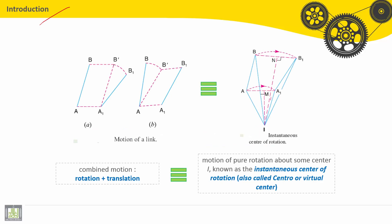As an introduction, if we consider one link AB, a solid AB or a rigid body, if we have a combined motion rotation and translation, we can see here the solid AB makes a translation first. A moves to A1 and B moves to B'.